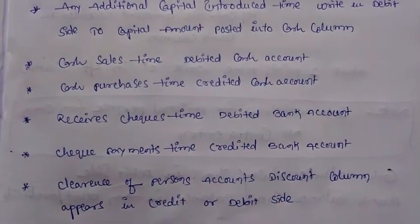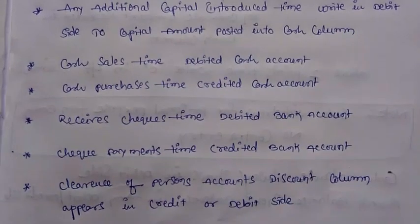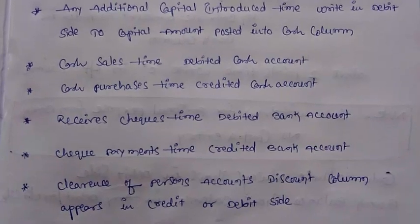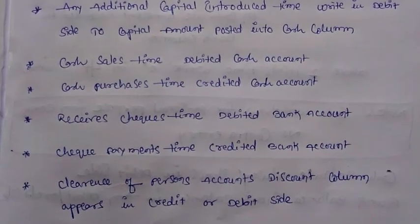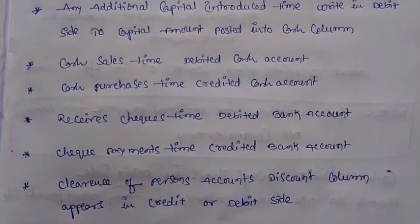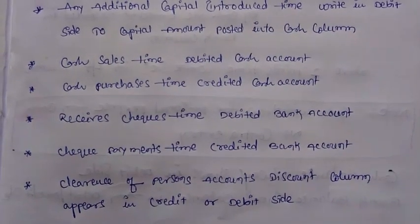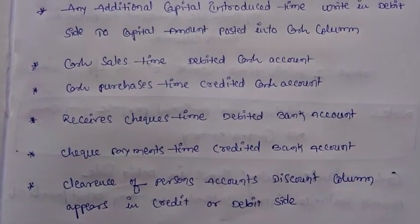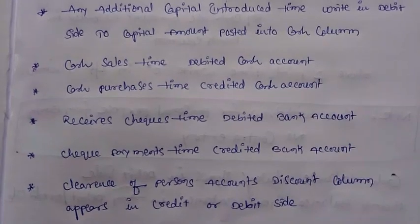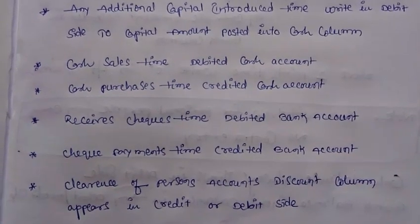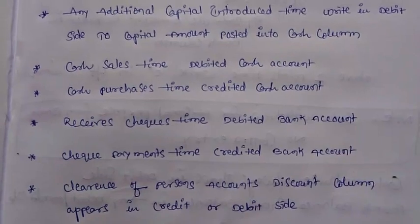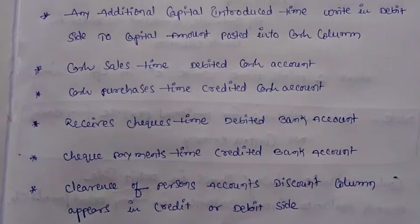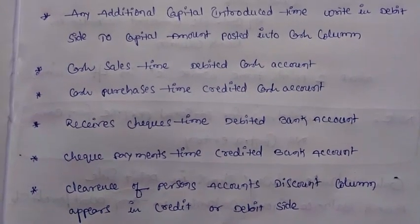Next, for clearance of persons' accounts, the discount column appears on the credit or debit side. For example, when we are receiving cash and offering discount, that is recorded on the debit side. When we are paying cash and receiving discount — that is received discount — the discount is recorded on the credit side.